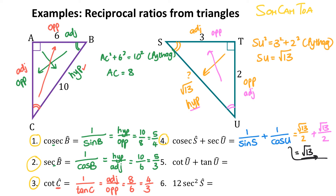Next: cot of U plus tan of U. Cot is 1 out of tan of U, so this is 1 out of tan of U plus tan of U. Tan of U is opposite over adjacent, so it's going to be adjacent out of opposite plus opposite out of adjacent. Either working these out manually or using a calculator, the answer is 13 out of 6.